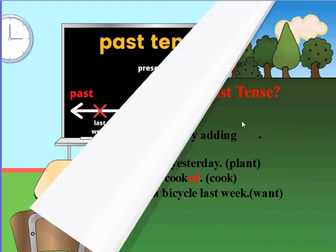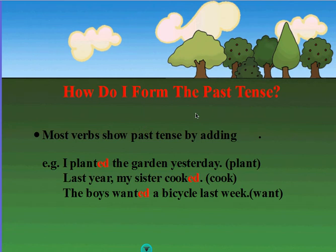So, how do I form the past tense? Most verbs show past tense by adding -ed. Example: I planted the garden yesterday. The base verb is plant, so we add -ed to plant to show that it happened in the past.